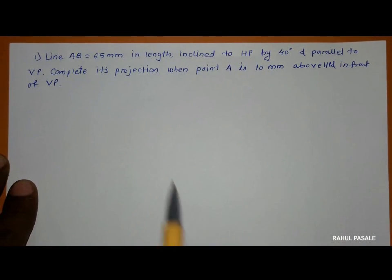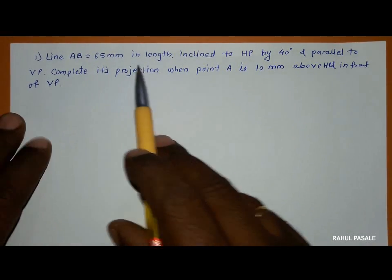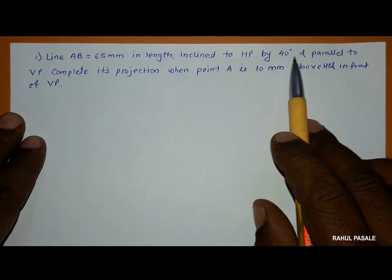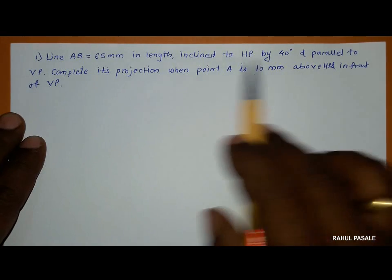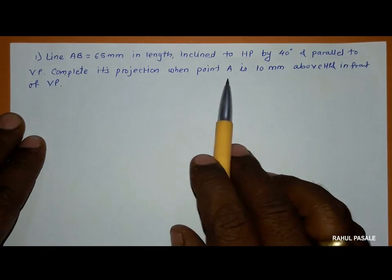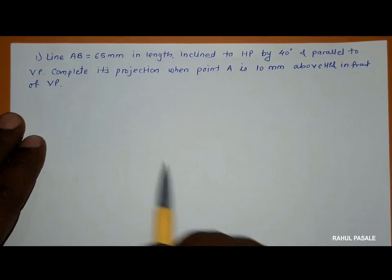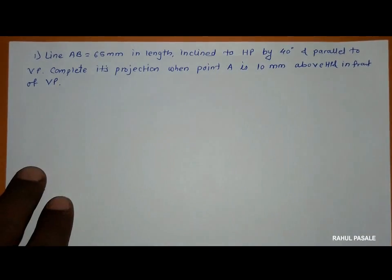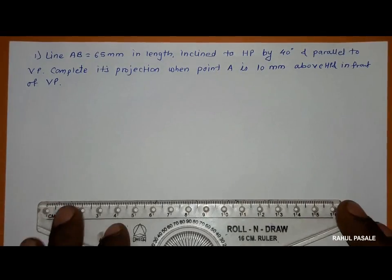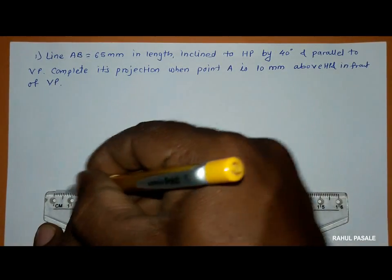In this problem it is given that line AB is 65 mm in length, inclined to HP by 45 degrees and parallel to VP. Complete its projection when point A is 10 mm above HP and in front of VP. First of all we will draw the XY axis.